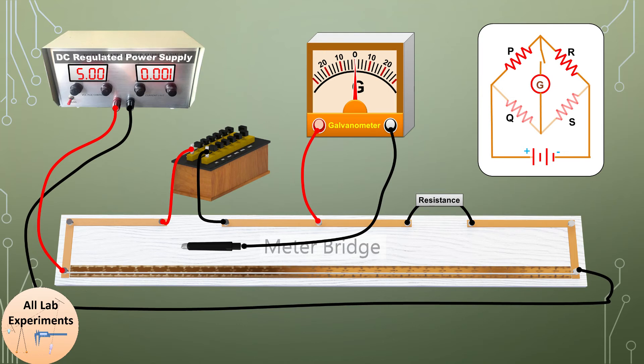In case if you don't have a regulated power supply, you can use a battery and a rheostat in series at this place and apply a suitable resistance P using this resistance box. One thing you should take care is that this resistance P should be comparable to this unknown resistance.